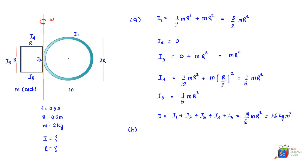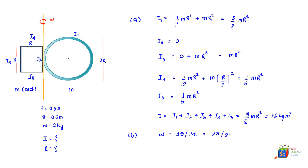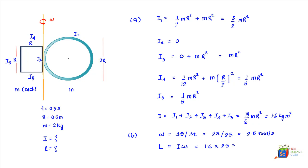For Part B, we find the angular momentum. The angular velocity ω = 2π / T = 2π / 2.5 ≈ 2.5 radians per second. The angular momentum L = I·ω, and substituting I = 1.6 kg·m² and ω = 2.5 rad/s gives L = 4 kg·m²/s.